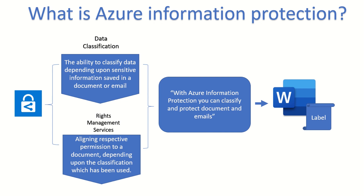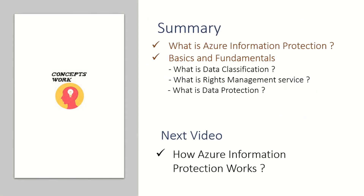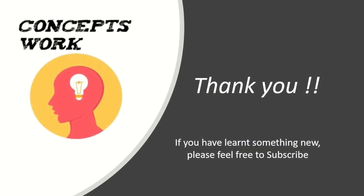In the next video, I'm going to show you how exactly Azure Information Protection works when both of these technologies are combined. To summarize what we've discussed in this video: we covered what Azure Information Protection is, the basics related to it including data classification and rights management service, and why it is important for any enterprise to protect data — ensuring that users who are not authorized to access a document are blocked or given only the required permissions. If you've learned anything new, please feel free to subscribe. Thank you so much for your time.